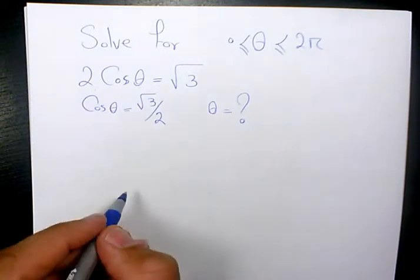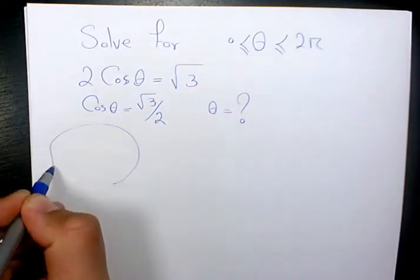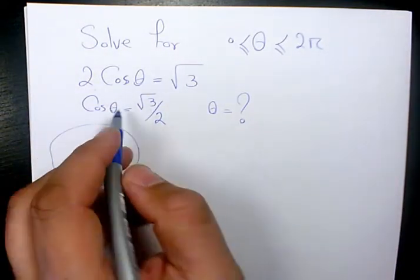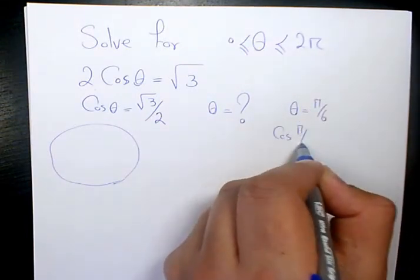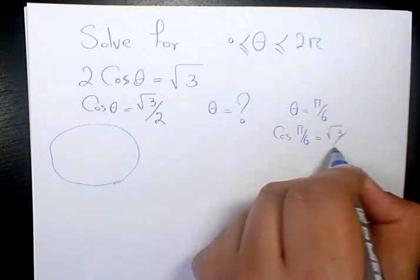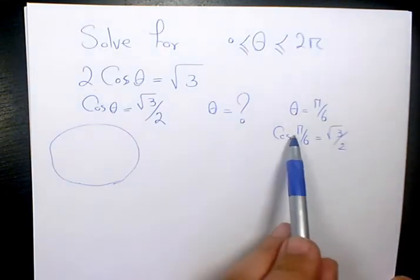Based on the special angles, we know theta has to be pi over 6. Why? Because cosine pi over 6 equals root 3 over 2. So one of the answers is pi over 6.